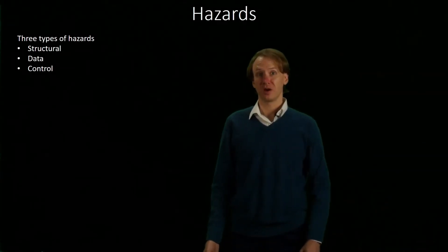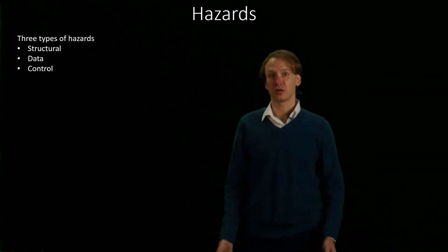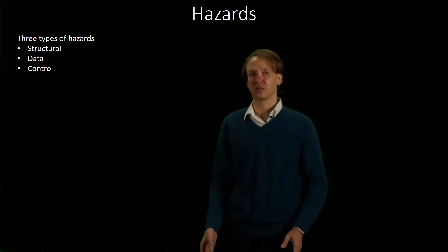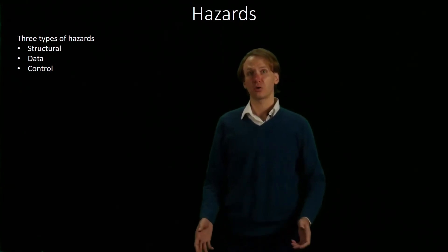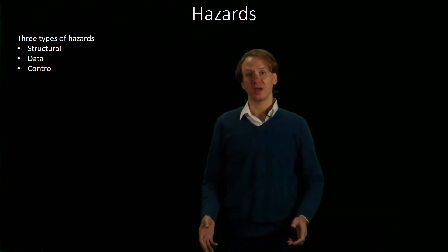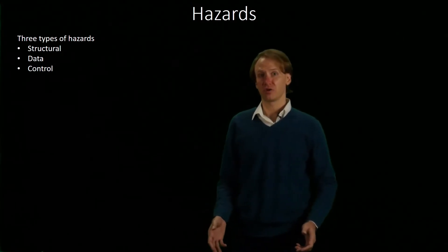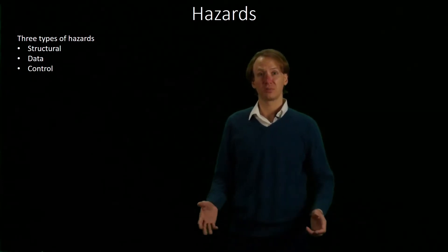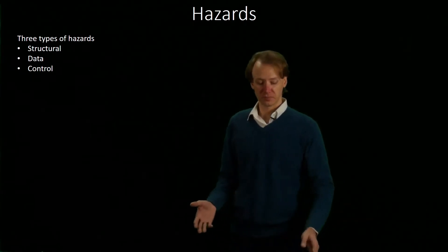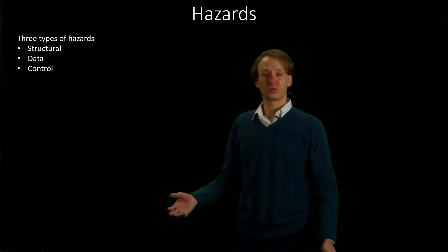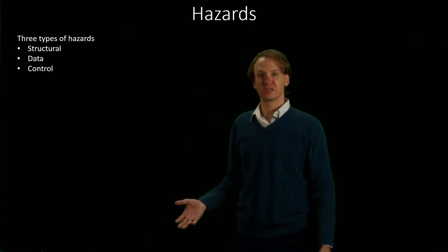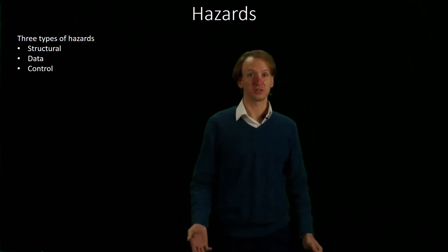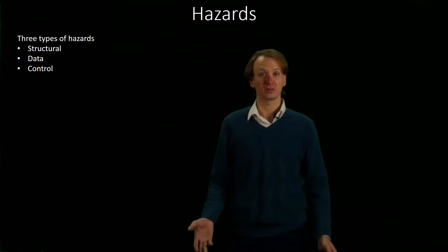Running five instructions through the pipeline concurrently, however, is not without its risks. We're going to look at some of the hazards that can arise in the five-stage pipeline and how we can ameliorate those. We're going to look at three different types of hazards: structural hazards, data hazards, and control hazards.